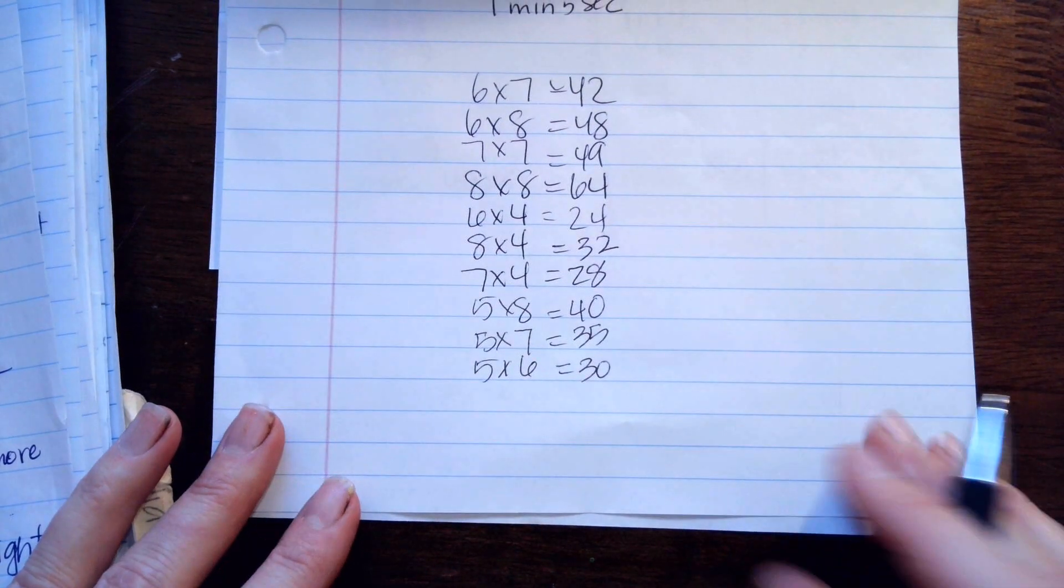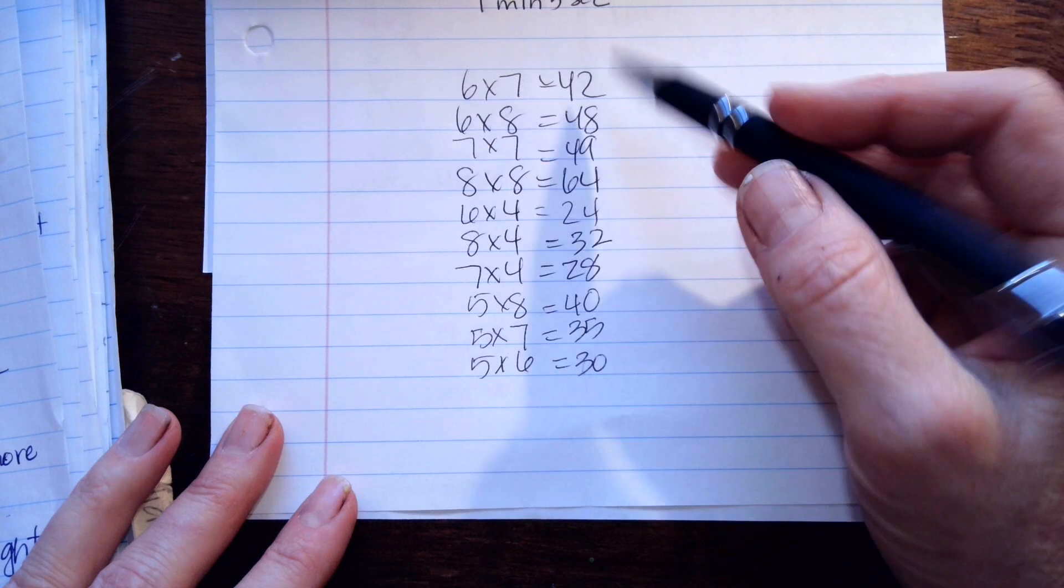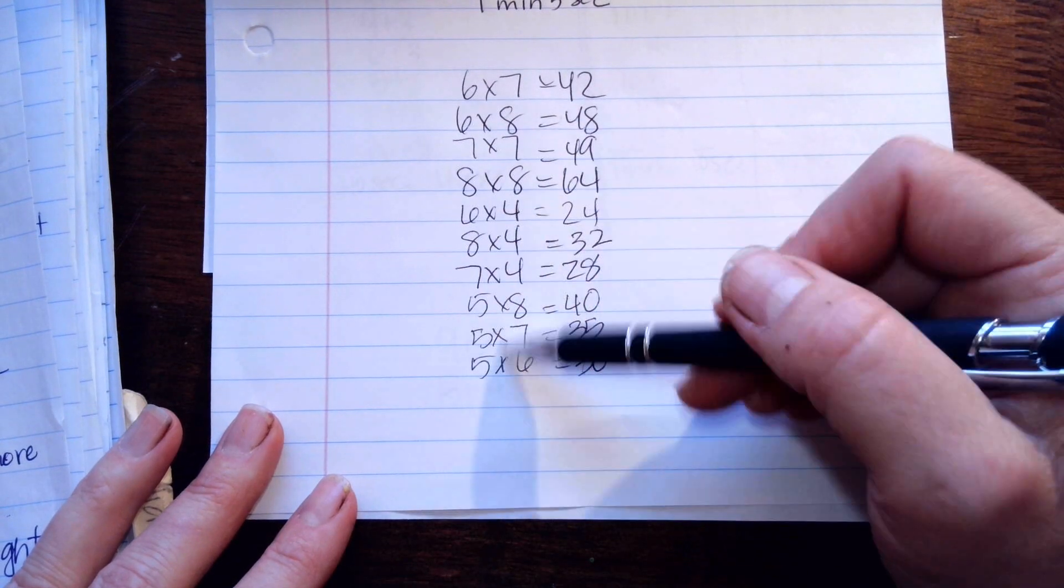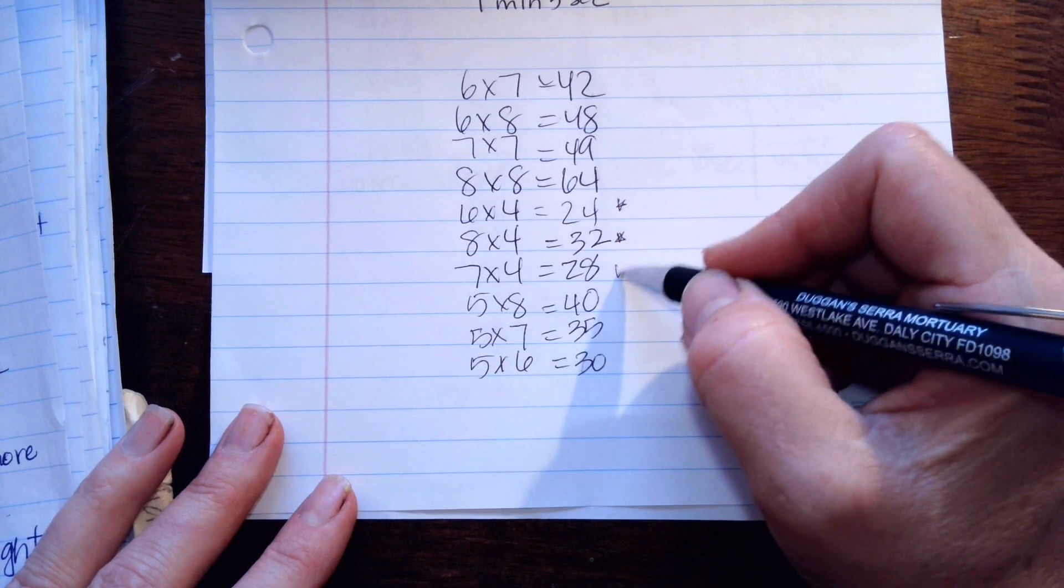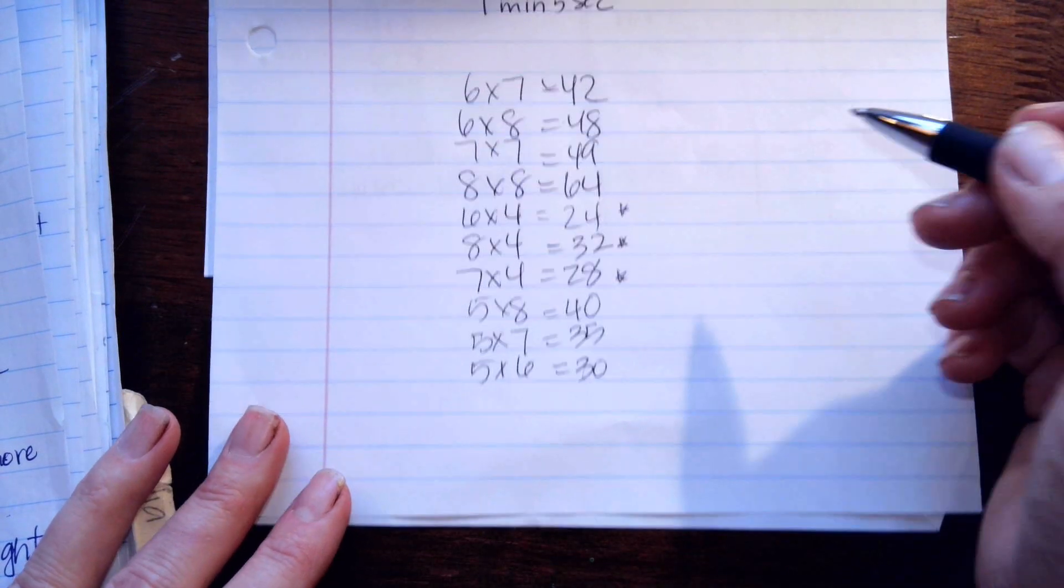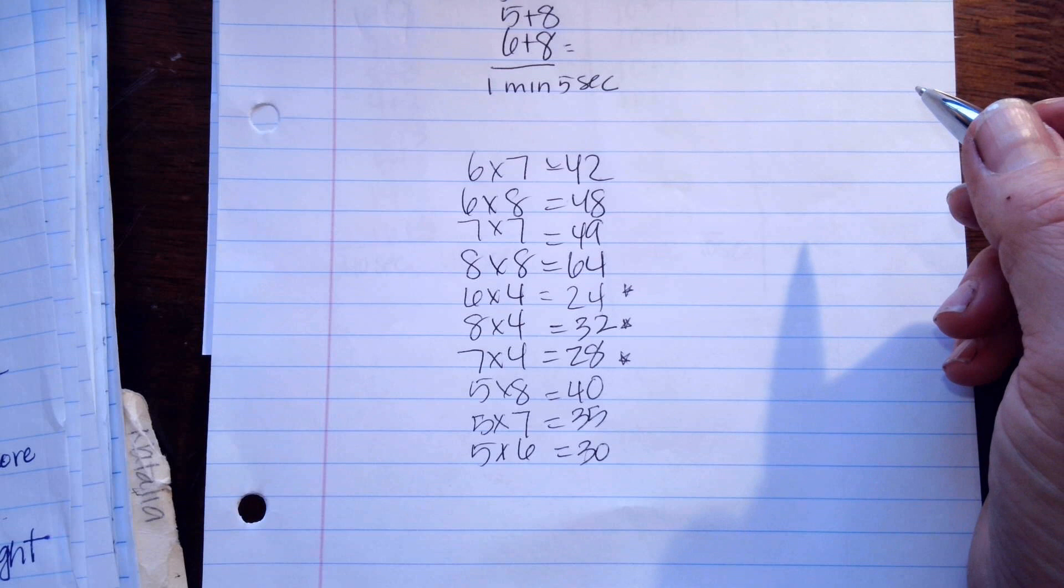So you can practice these three times. Just go 6 times 7 is 42, 6 times 8... These are mostly the ones to memorize except for times 4. You can use your strategy, but the rest of them we're going to memorize.